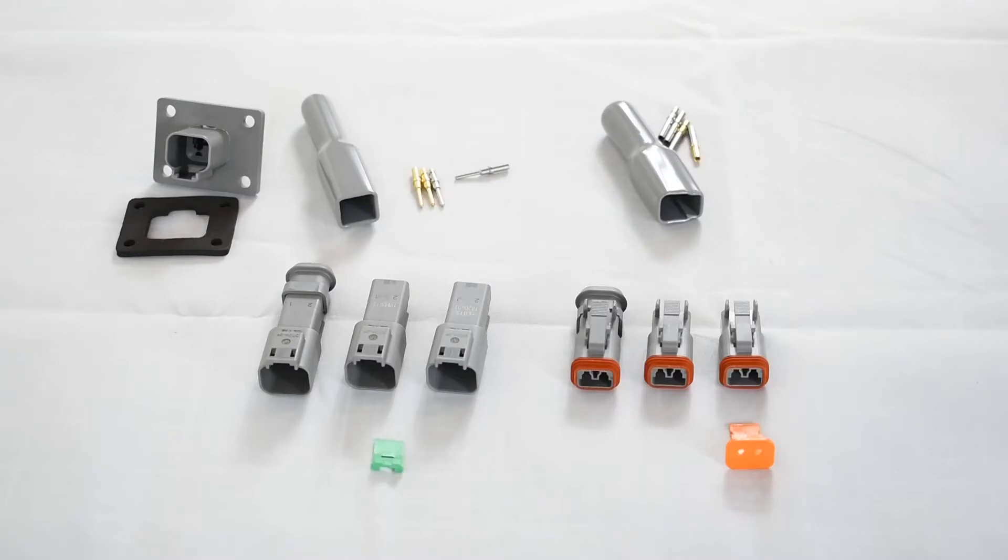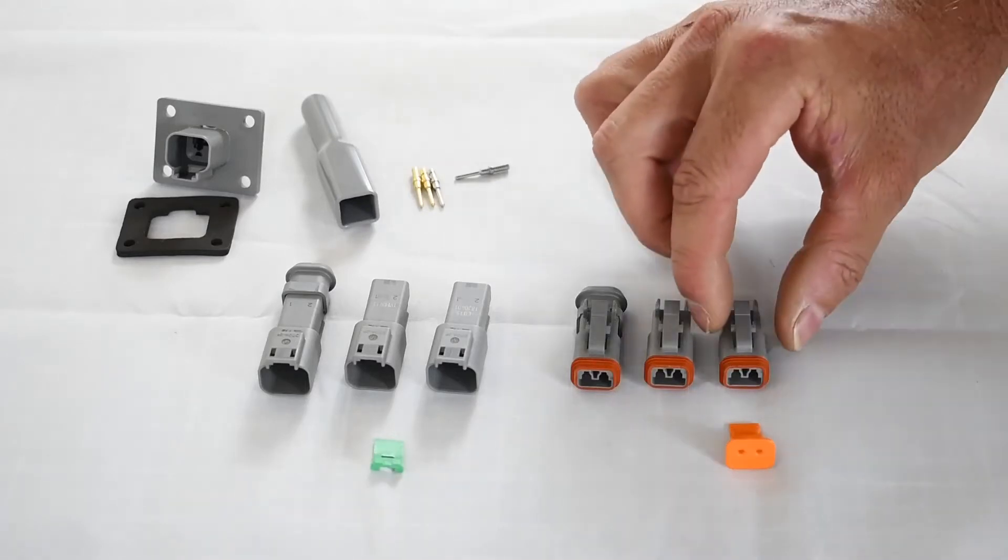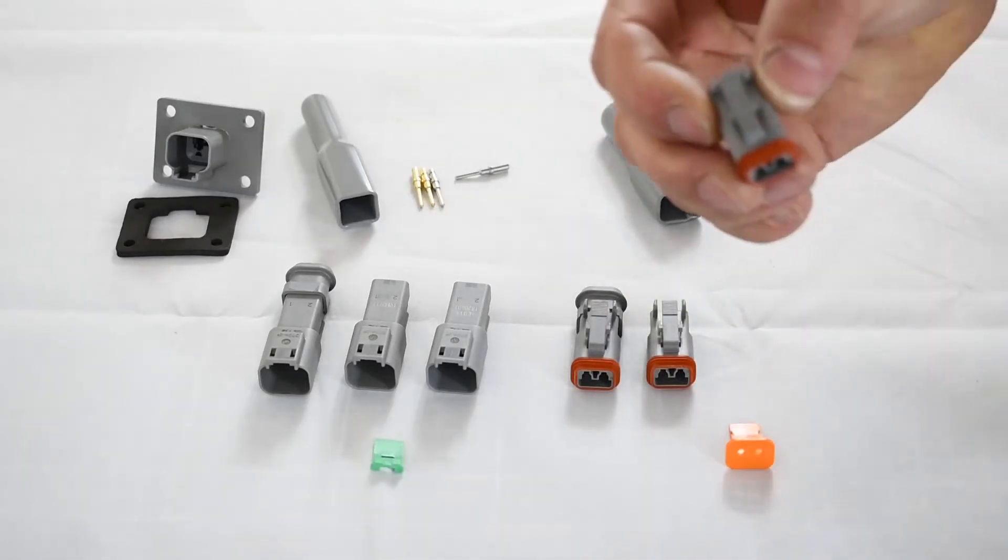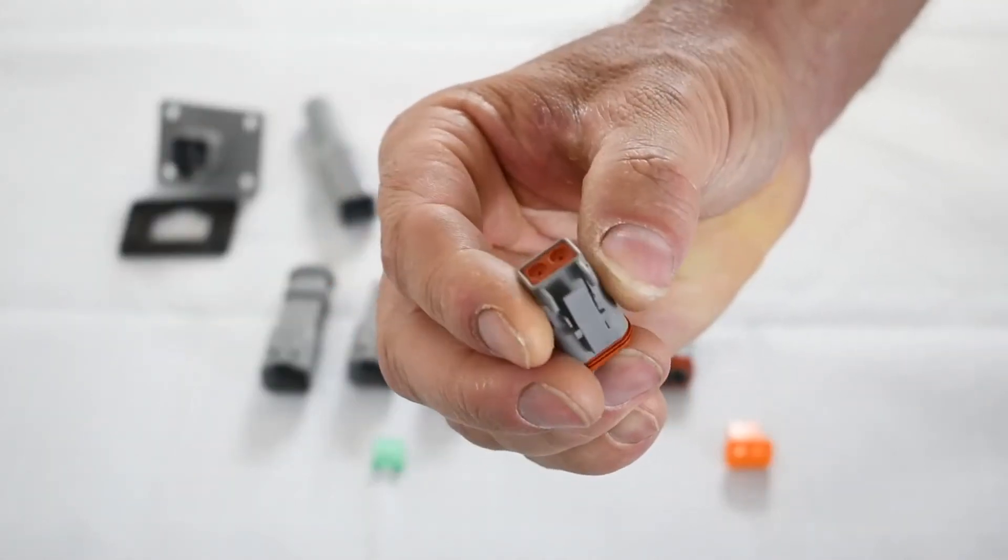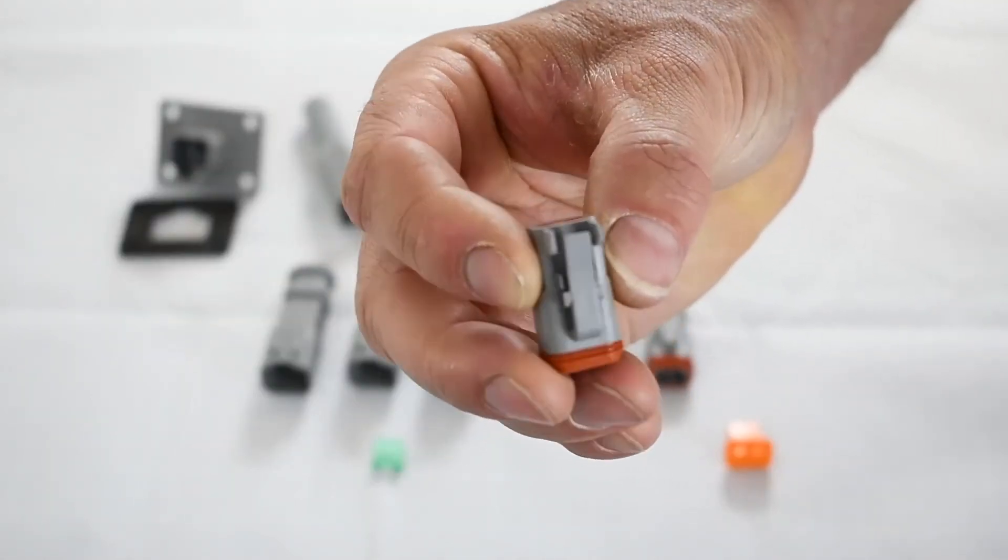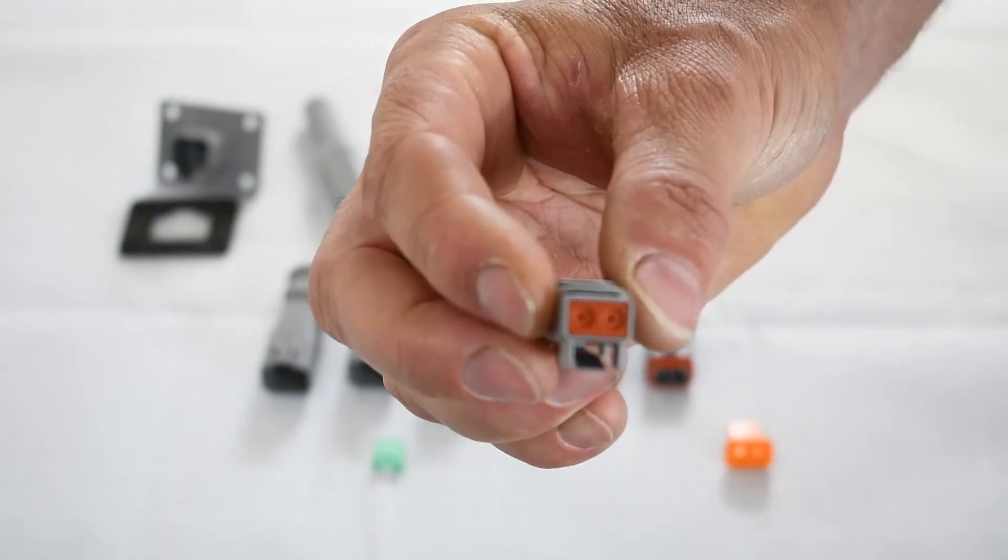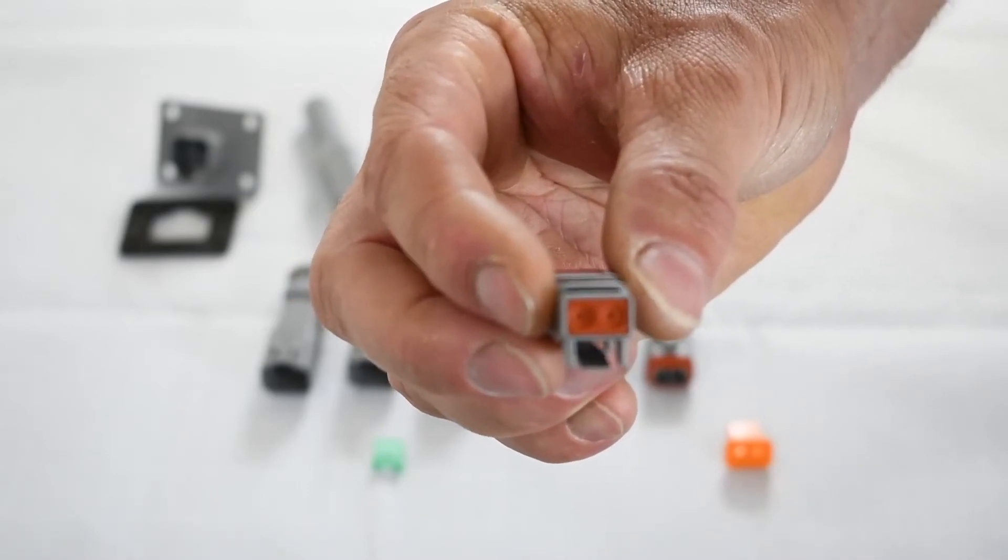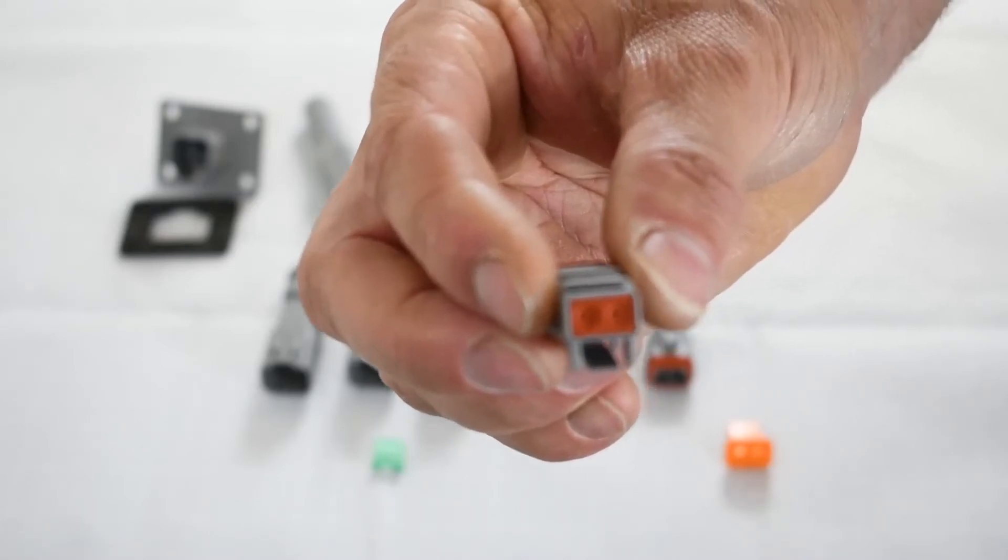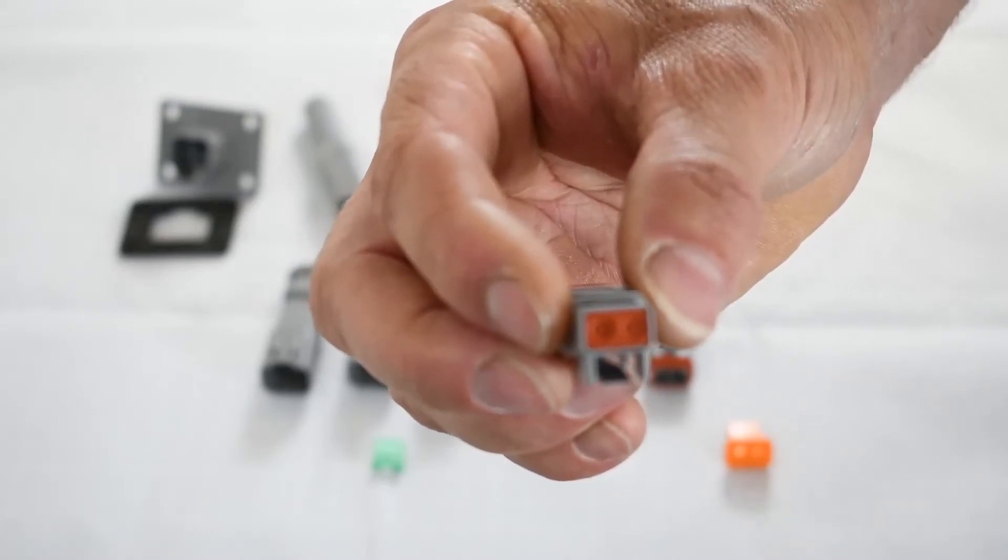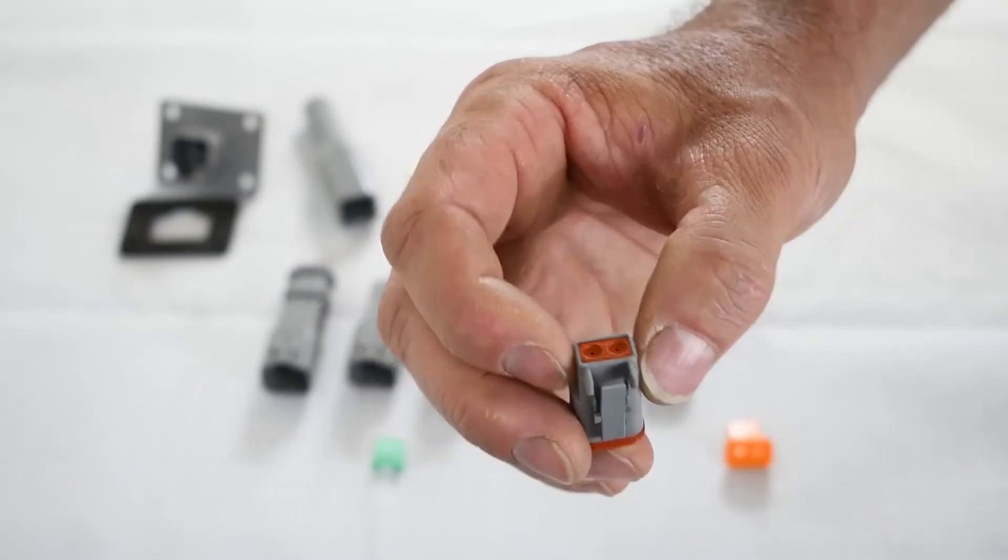So I'll start with the plugs, the DT plugs. I'll just bring that into field. The plugs have the seal at the back. It's where you insert the contacts or the terminals through the back. And they offer two types, just the standard or alternately there's one which has an enhanced retention seal.